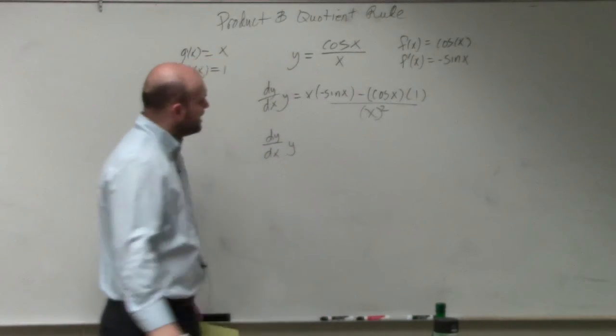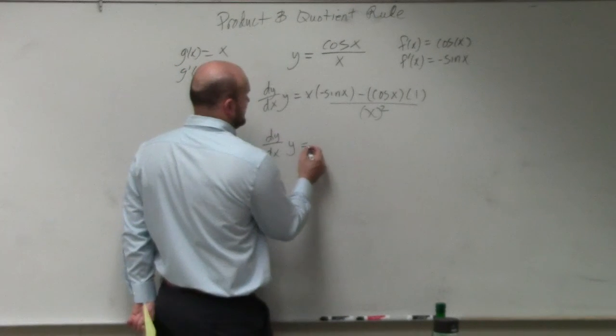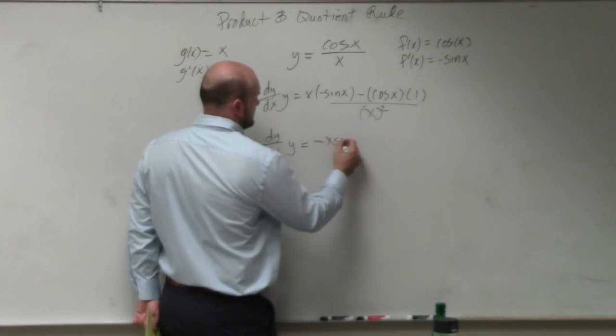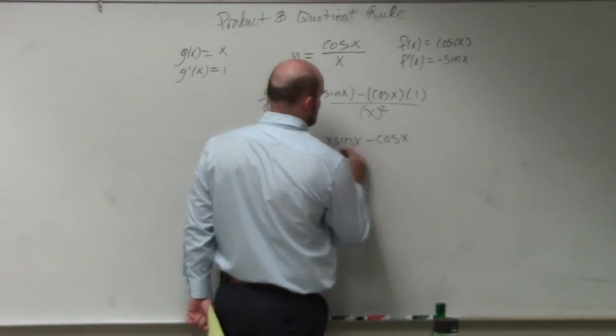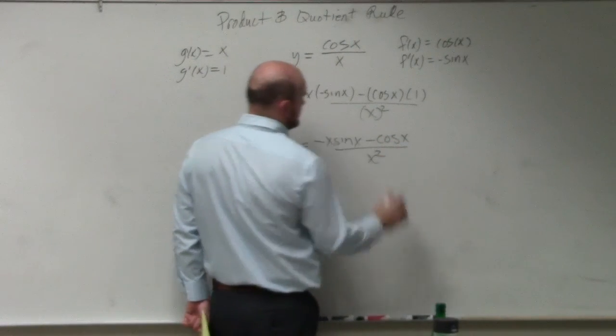So dy dx is equal to negative x sine of x minus cosine of x all over x squared.